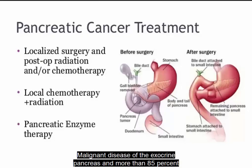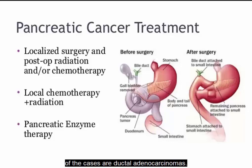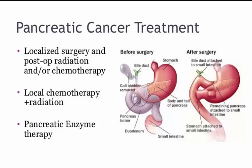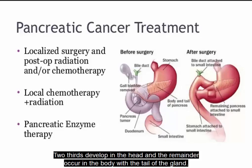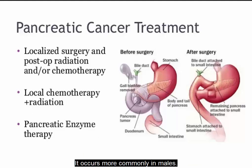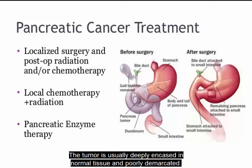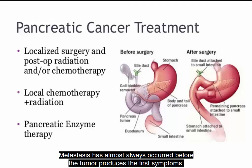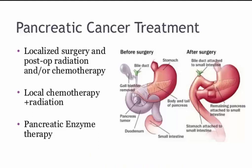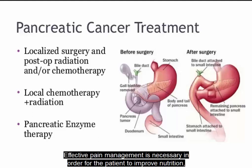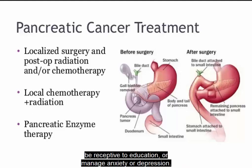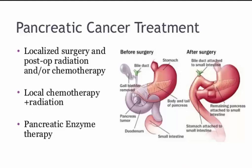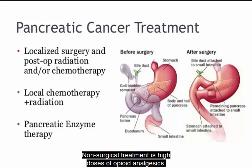Malignant disease of the exocrine pancreas: more than 85% of cases are ductal adenocarcinomas. Two-thirds develop in the head and the remainder occur in the body or tail of the gland. It occurs more commonly in males. The tumor is usually deeply encased in normal tissue and poorly demarcated. The common duct is often obstructed and distended by the presence of the tumor. Metastases has almost always occurred before the tumor produces the first symptoms. Effective pain management is necessary for the patient to improve nutrition, be receptive to education, or manage anxiety or depression. Non-surgical treatment includes high doses of opioid analgesics.